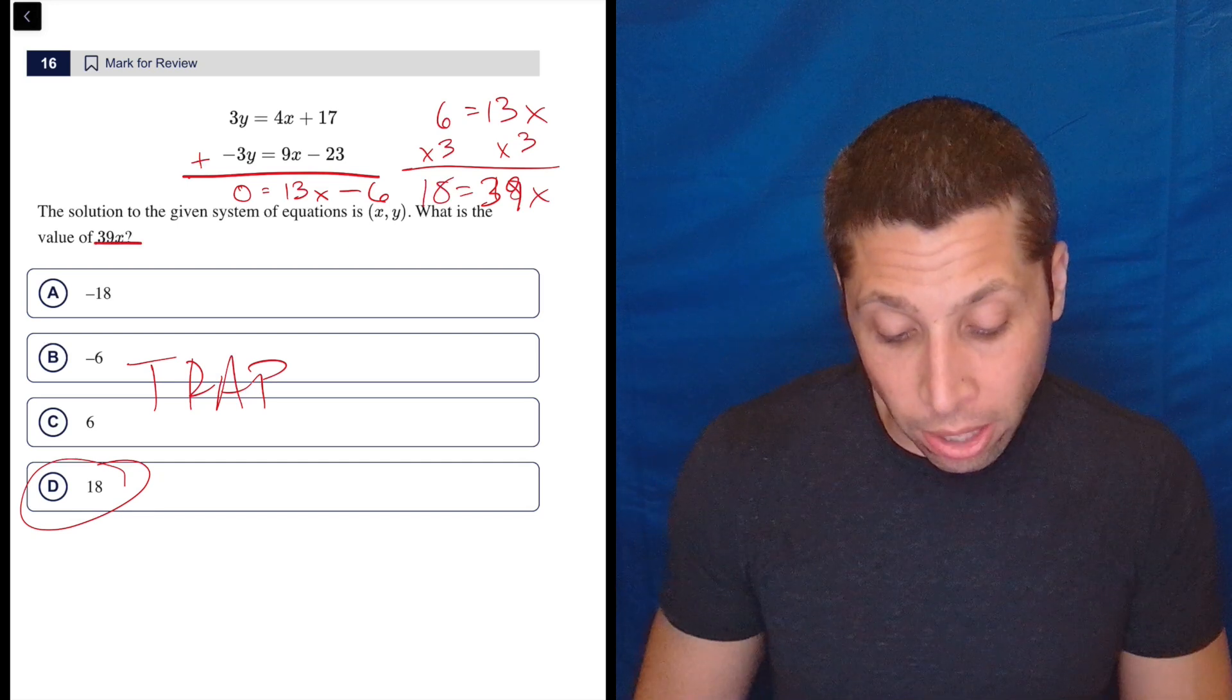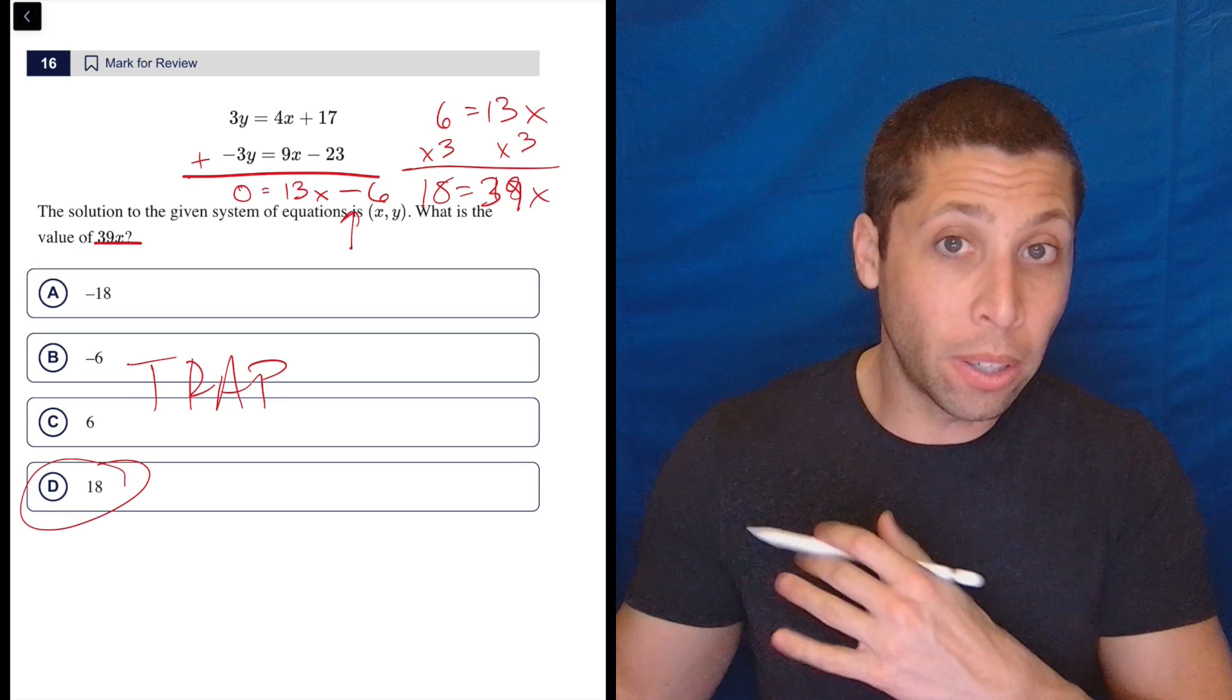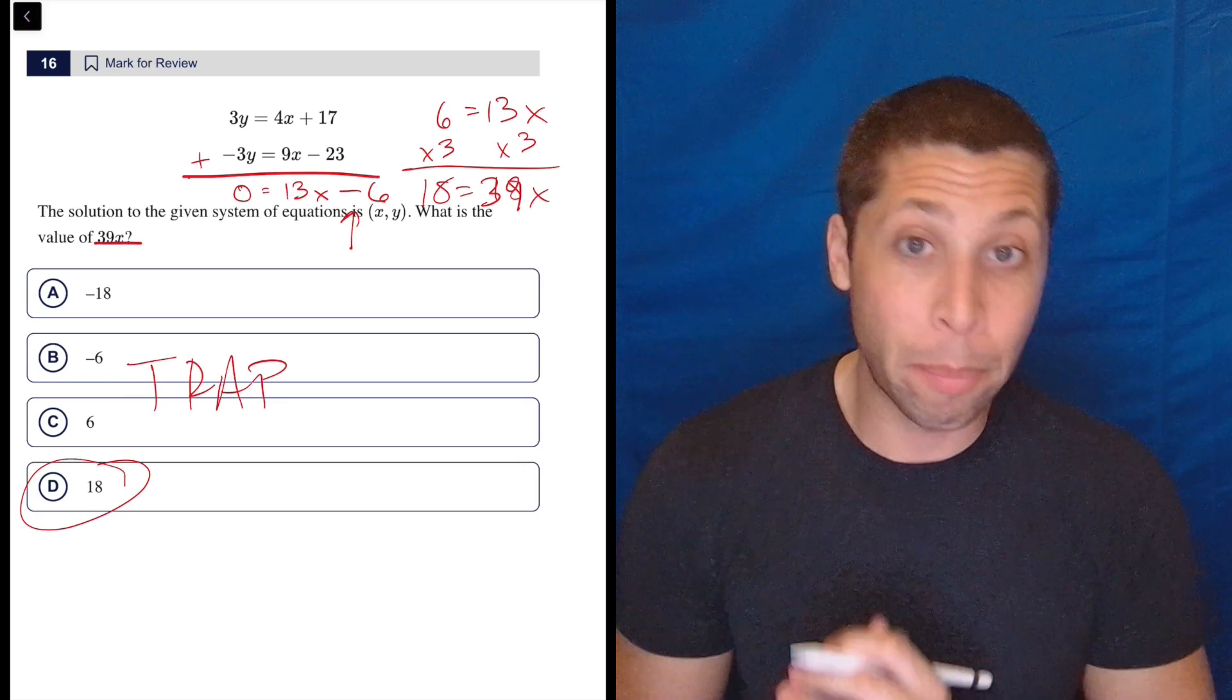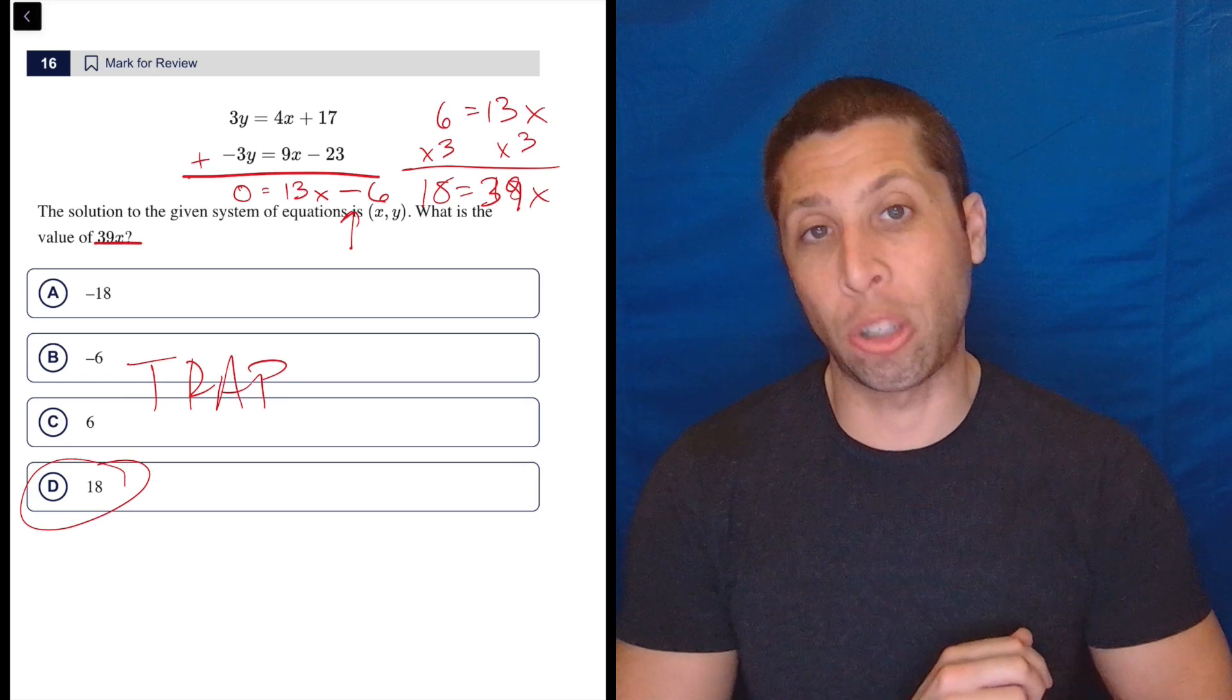But I don't know, I could easily lose the negative as I was moving that over. And then I would have gotten negative 18. Then I'd pick A and I'd be just as confident. So there's always danger in algebra.